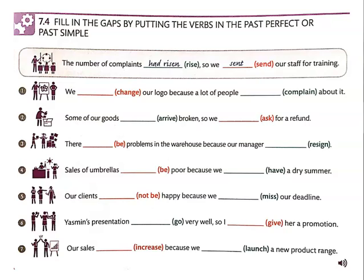Number four: Sales of umbrellas were poor because we had had a dry summer. Number five: Our clients were not happy because we had missed our deadline. Number six: Yasmin's presentation had gone very well, so I gave her a promotion. And number seven: Our sales increased because we had launched a new product range.